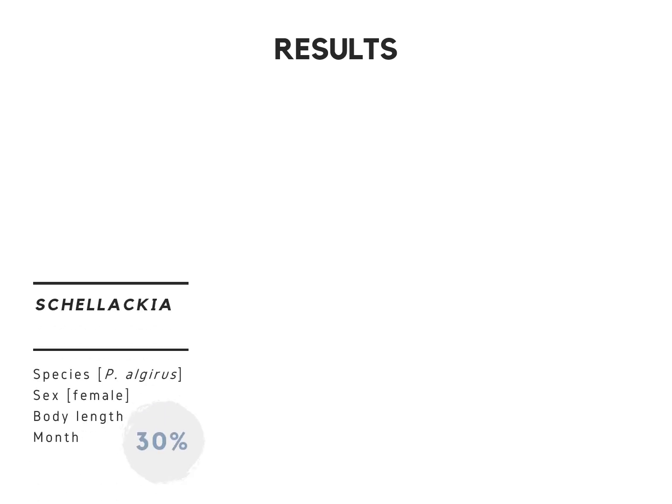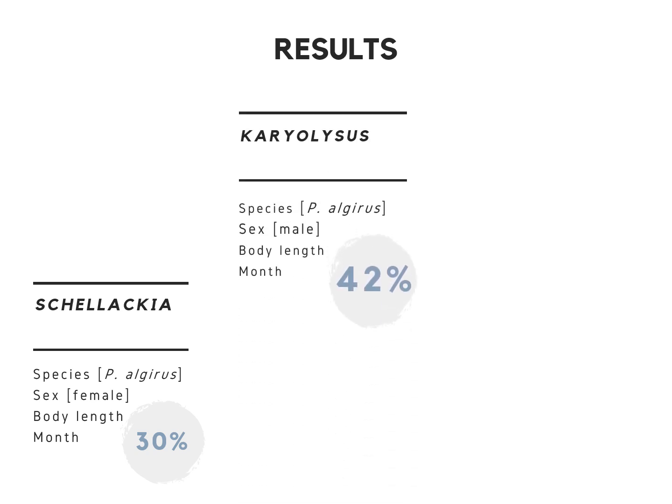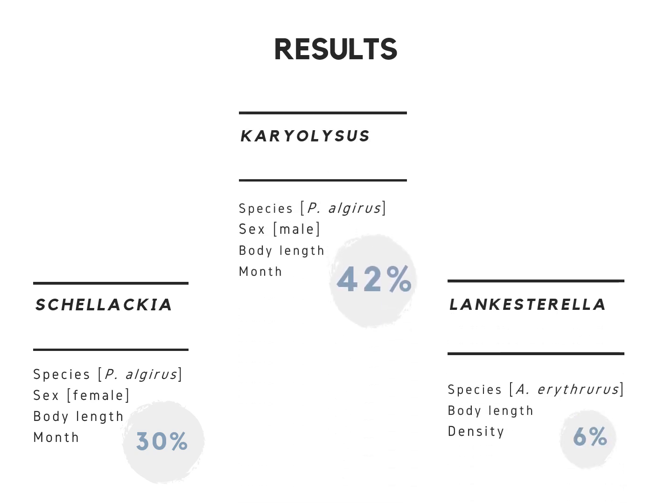As for the results, we obtained 30% prevalence for Schellackia, 42% for Haemolivia, and 6% for Lankesterella in our sample. Interestingly, parasites were host-specific: Lankesterella was found in Acanthodactylus erythrurus, whereas Schellackia and Haemolivia were found in Psammodromus algirus. Different factors explained the number of parasites per host individual across the three genera.